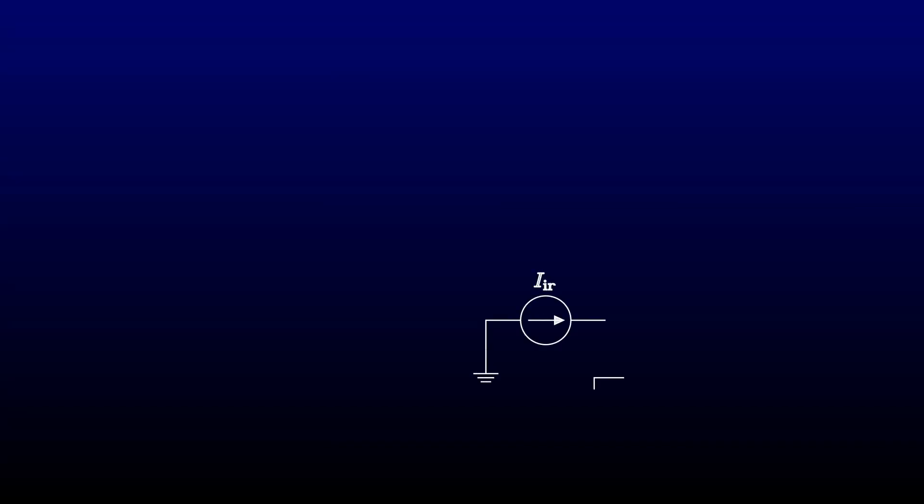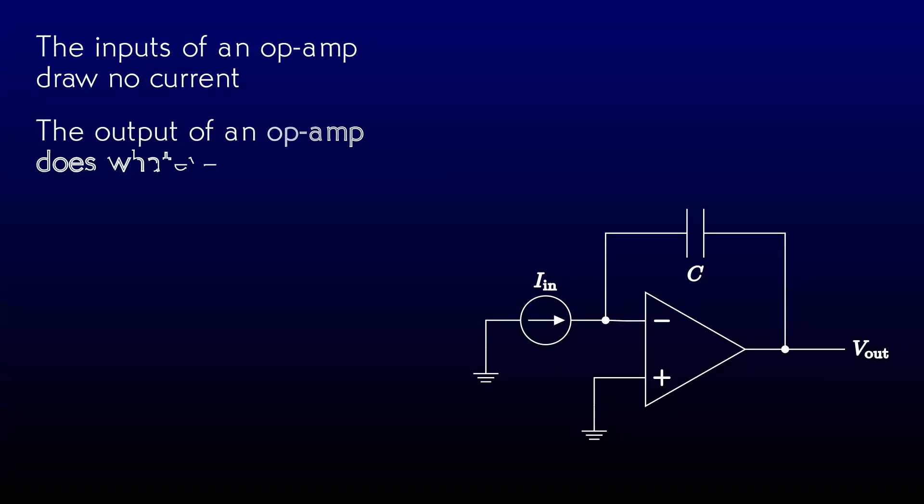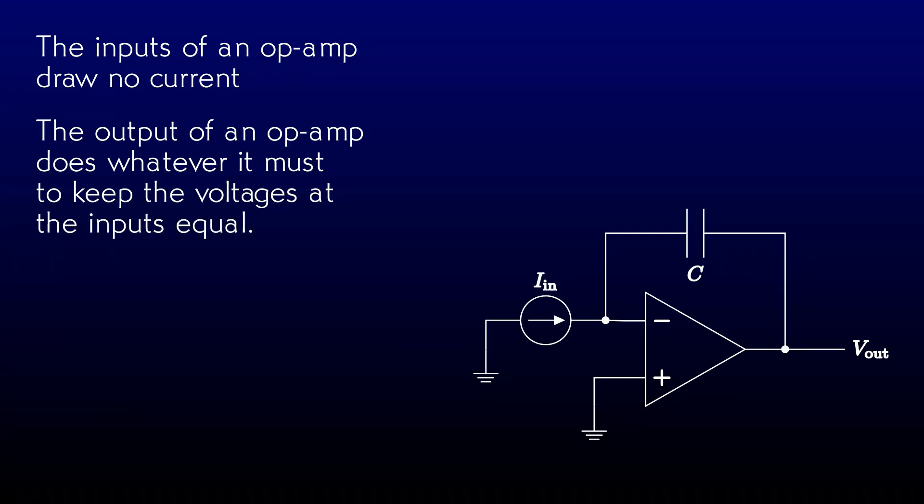An integrator is simply a single op-amp with a capacitor in the feedback loop. It's easy to understand if you look at the two rules of an ideal op-amp and the definition of a capacitor. That is to say, the inputs of an op-amp draw no current, and the op-amp gain is so high that the output will do whatever it needs to to keep the input voltages the same.